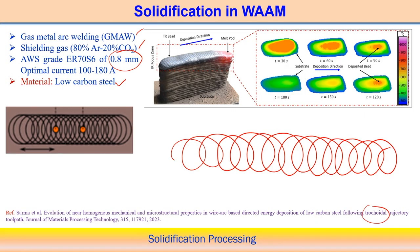Observing the temperature distribution during deposition using an infrared camera, we see how temperature changes. At t = 30 seconds, the temperature is in the range of approximately 700 to 800 degrees Celsius. Looking at t = 30, 60, 90, 120 seconds — by about 180 seconds this temperature region has disappeared, meaning it takes approximately 3 minutes to cool down.